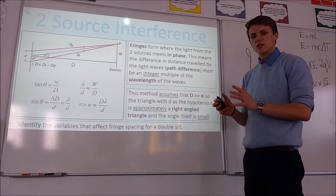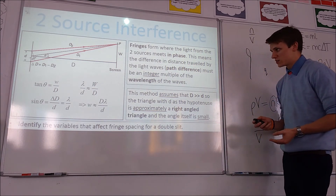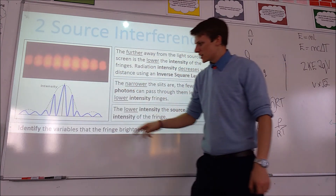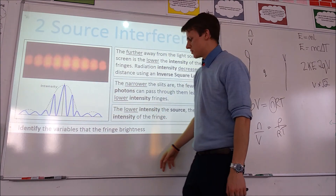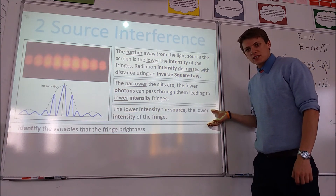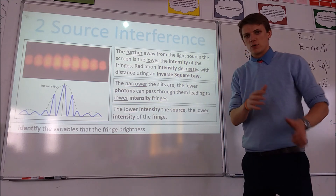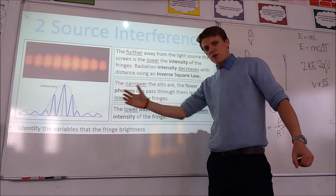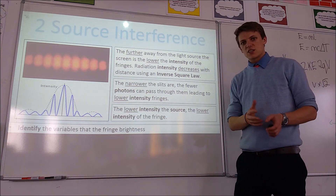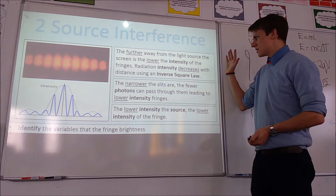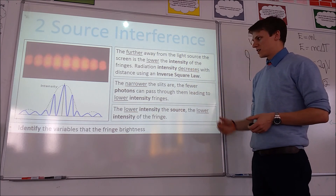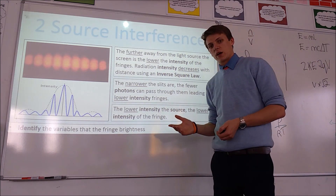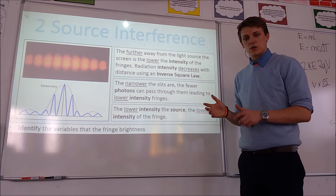Now let's look at how we can change the brightness. The central fringe is the brightest, and brightness decreases as we move outward because fewer photons end up at those locations. Using a higher intensity source — like a laser instead of a normal lamp — increases the brightness of the pattern. Also bear in mind that placing the screen further away means photons travel a larger distance, and intensity decreases with distance following an inverse square law, which you'll encounter more in Year 13. So you have to balance screen distance when setting up your practical work.